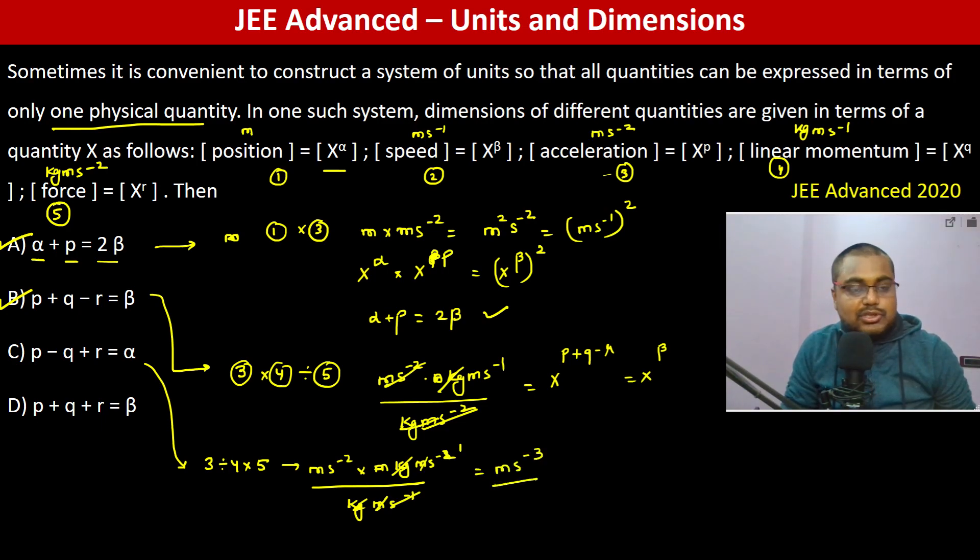This is minus one which becomes ms⁻³, which is not equal to meter. So this equals alpha, not that one. P plus q plus r equals beta clearly, we can see beta is meter per second.